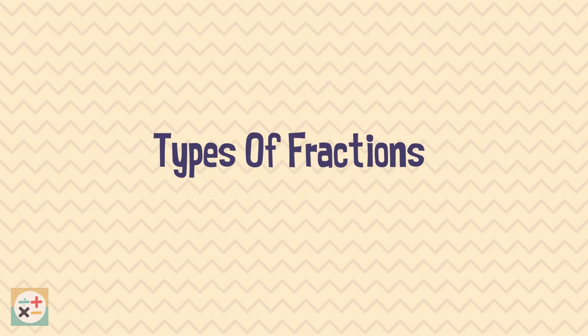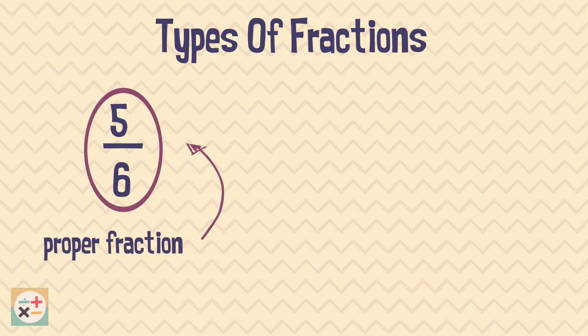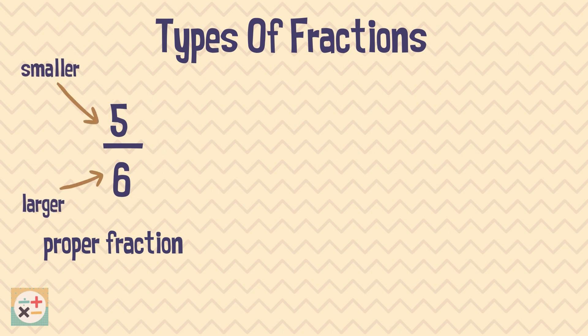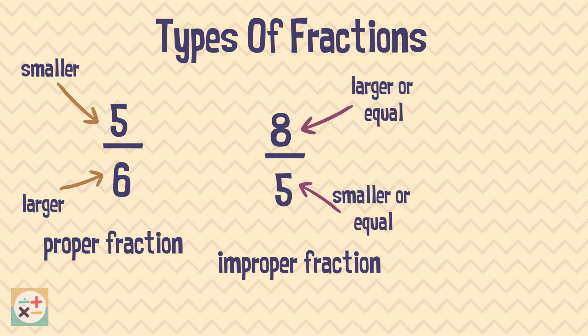There are different types of fractions. These are called proper fractions. Proper fractions have a numerator which is smaller than the denominator. This type is called an improper fraction. Improper fractions are top-heavy, meaning the numerator is larger than the denominator.